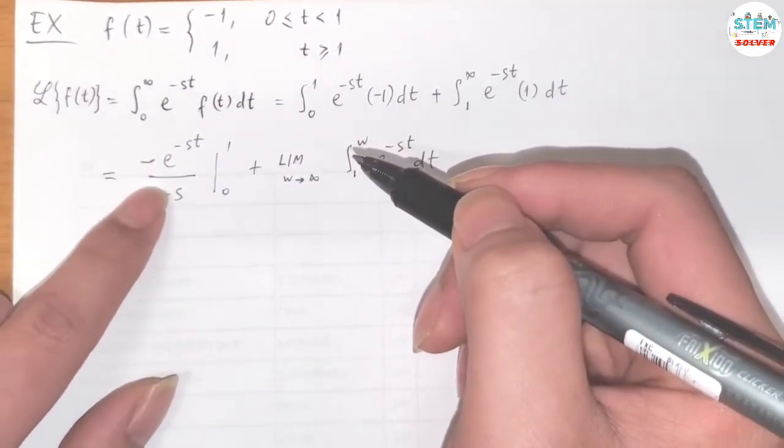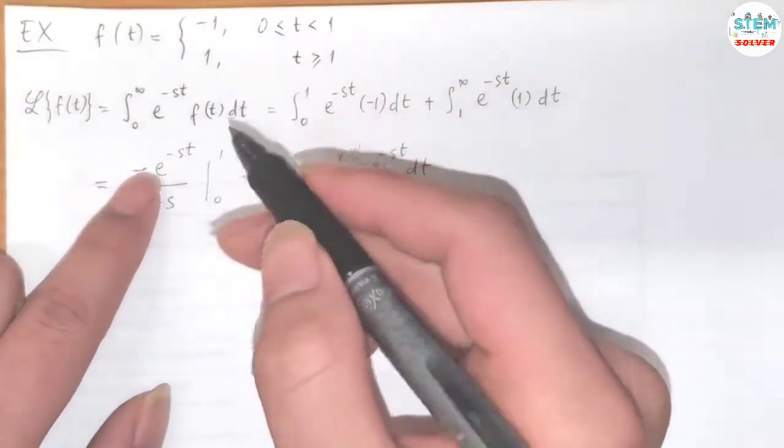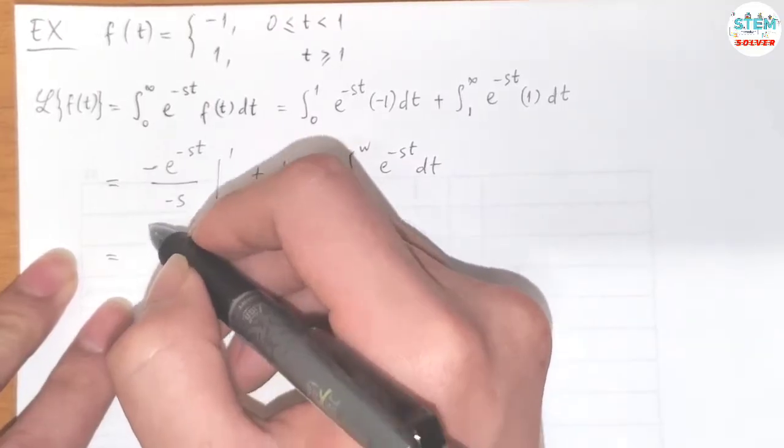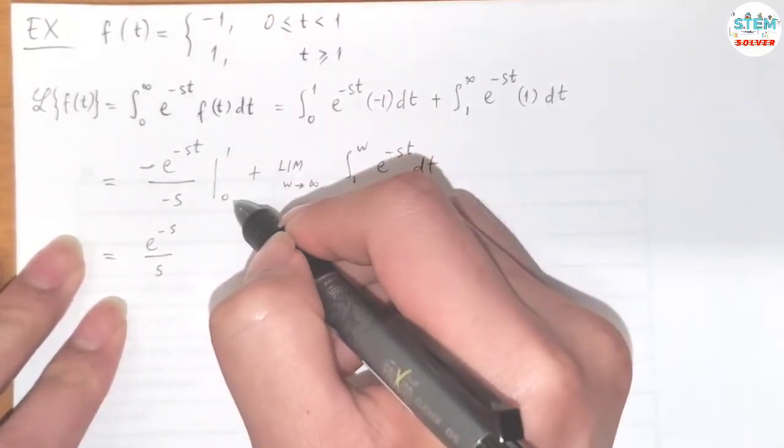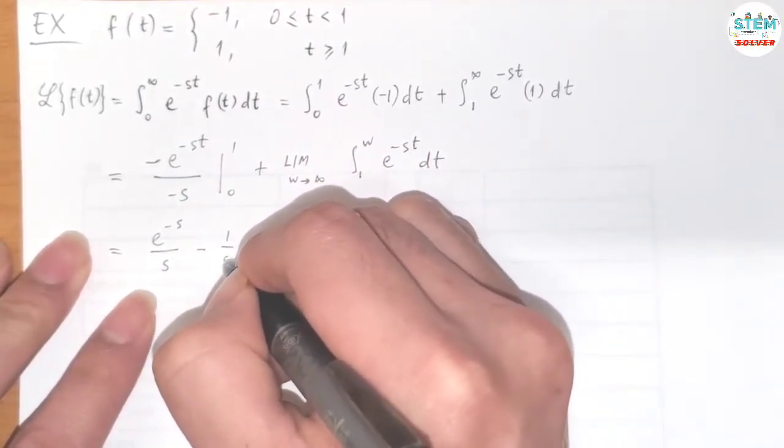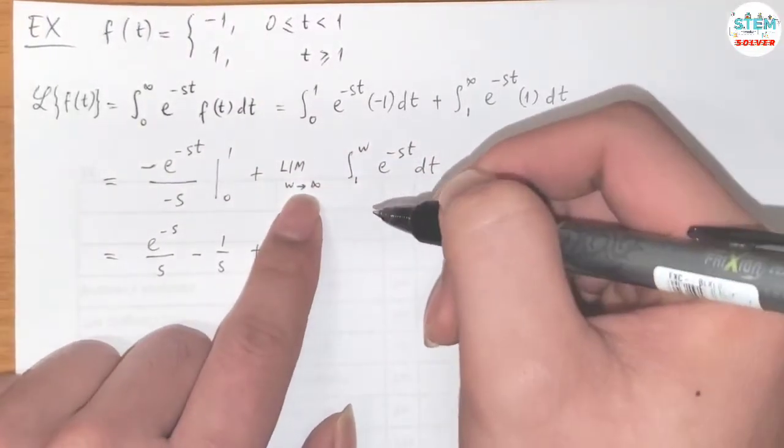So for this one, negatives cancel out. E plug in 1, we have e to the negative s over s. Minus 0, plug in 0. So we have 1 over s minus 1 over s plus.